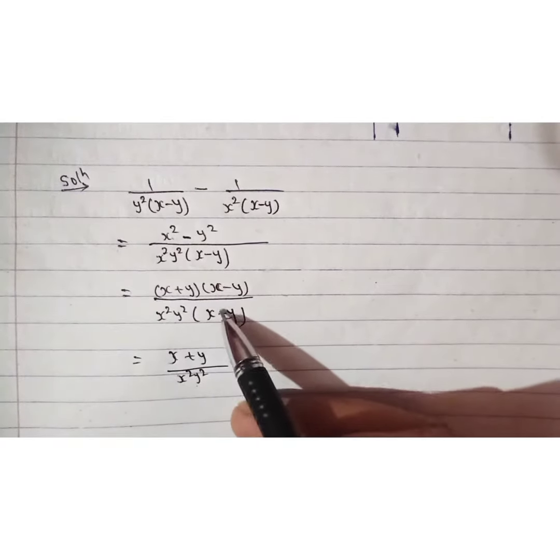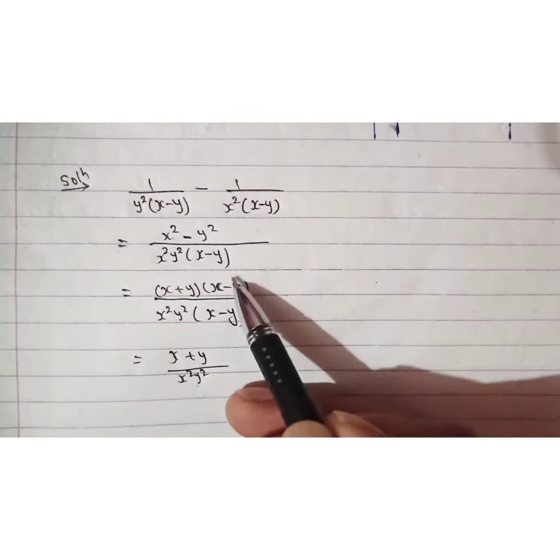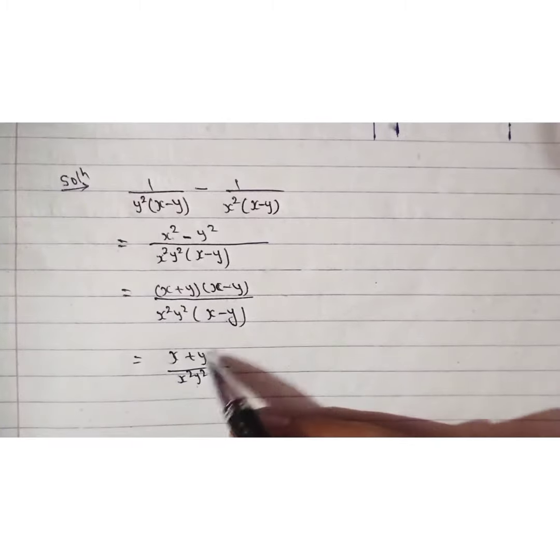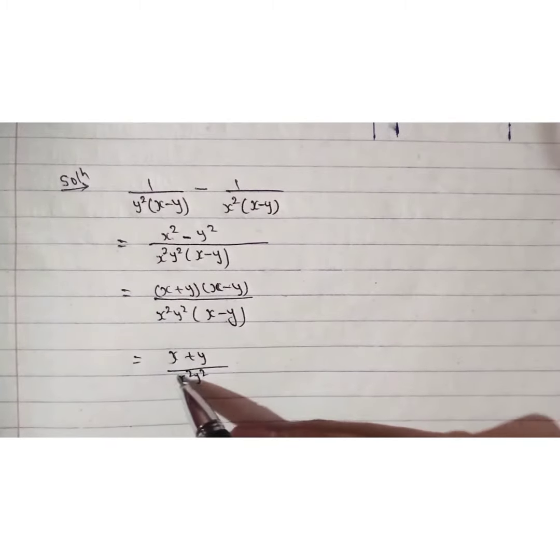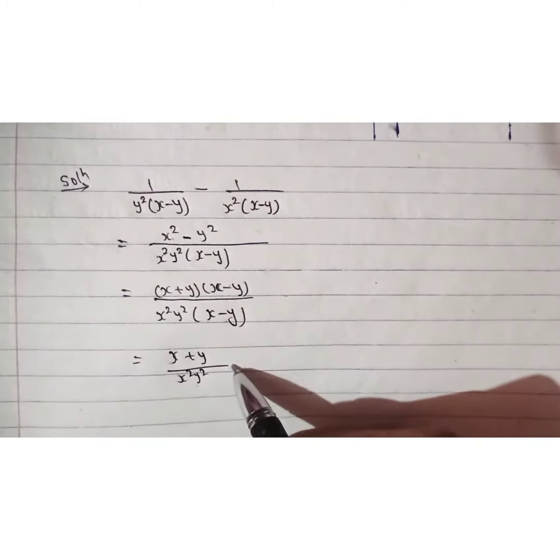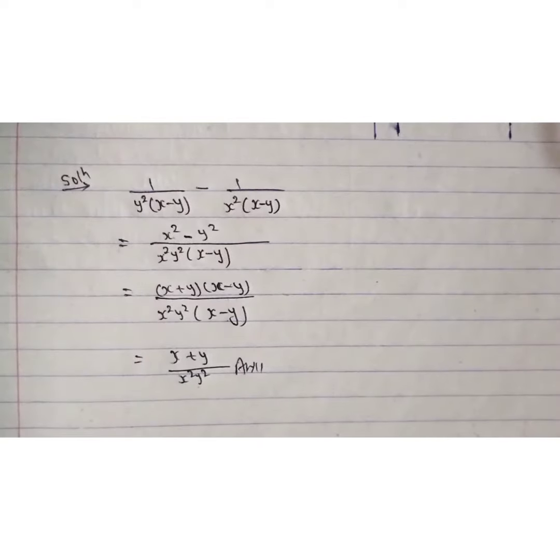As you can see here, this and this get cancelled. And (x+y) over x²y² is our final answer. That's it.